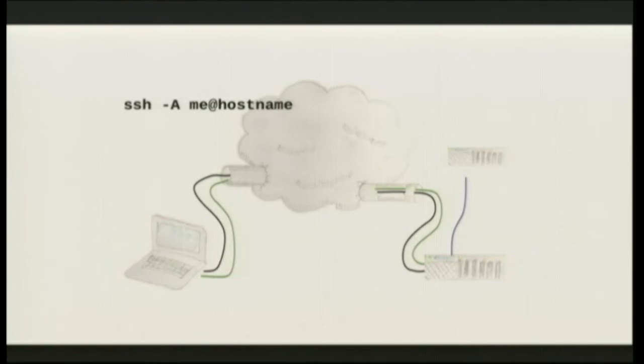This is such a common use case that SSH will automate that for you with one argument. You provide the -A argument, which sets up forwarding for the authentication agent. When you use this option while connecting to a remote system, SSH creates a socket file on the remote end and sets up an environment variable to tell subsequent SSH processes where to find it. When you run SSH on the remote machine, it sees that there's an authentication agent available, talks to that through the socket file — which is transparently forwarded back through the tunnel to the local agent running on your machine — and that does any key operations required. So your private key doesn't travel across the wire and is never left on the remote system.